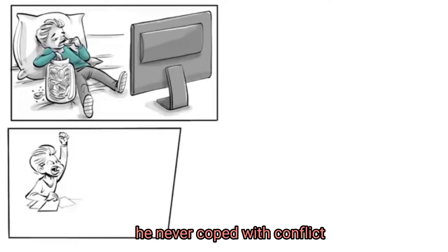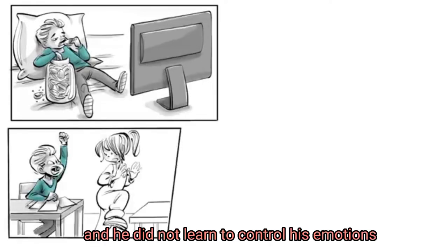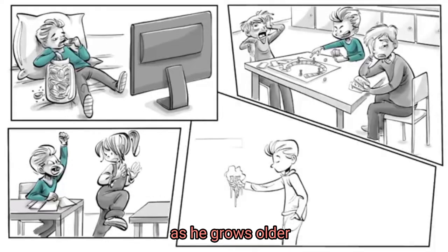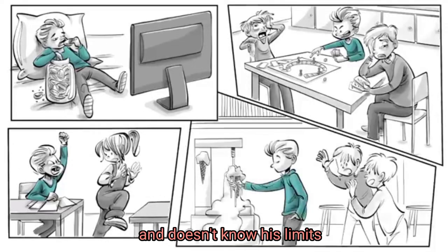Peter grows up completely without borders and does whatever he thinks is right. He never coped with conflict, and he did not learn to control his emotions. The fact that he always got what he wanted made him a bad loser. As he grows older, he often acts inconsiderate and doesn't know his limits.